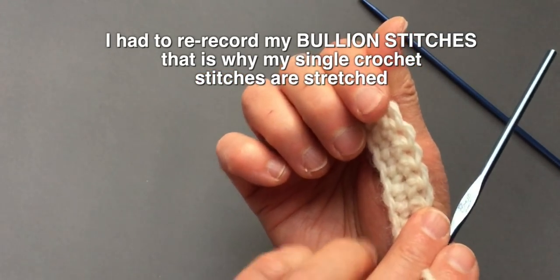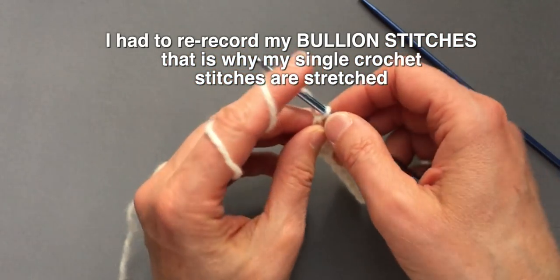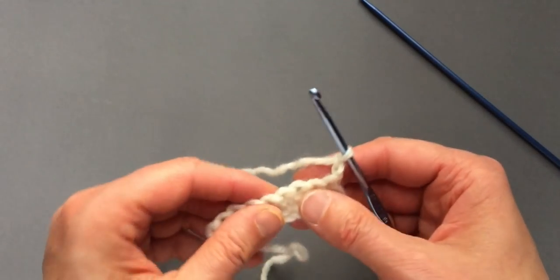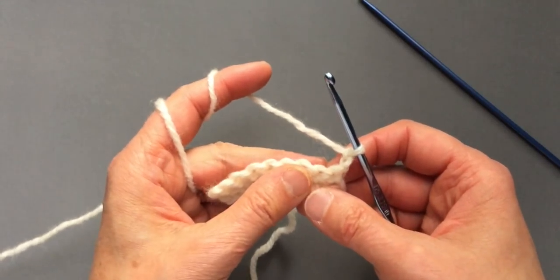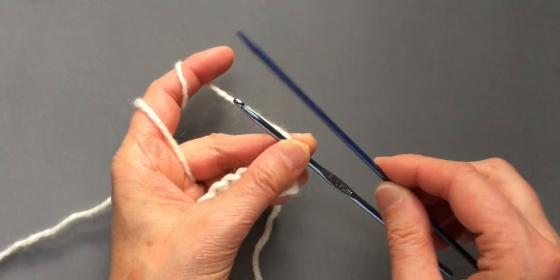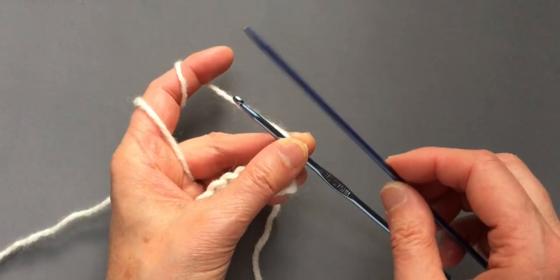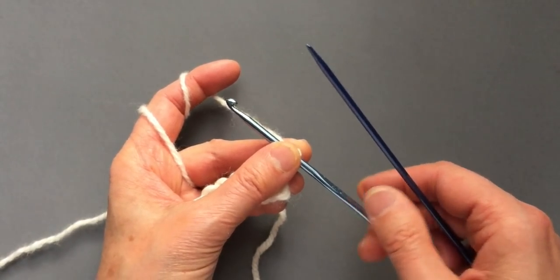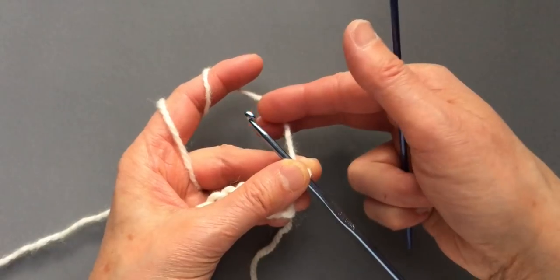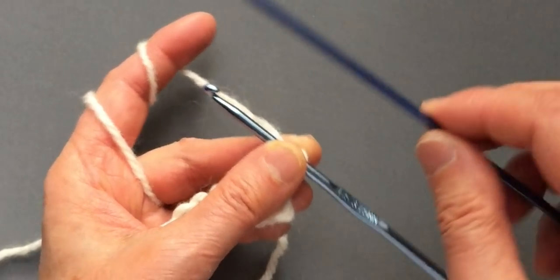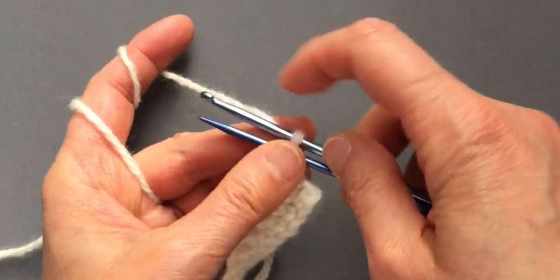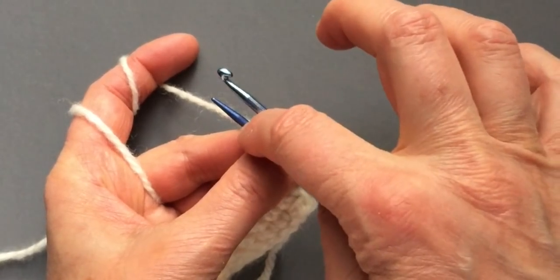Now that you have the base, you will make two chain and then we will be working on our bouillon stitches. As you see, we need another tool. I'm using a needle, but you can use any tool and any thickness of the hook which corresponds with the thickness of your yarn. But the needle I have is a little thinner than my hook.